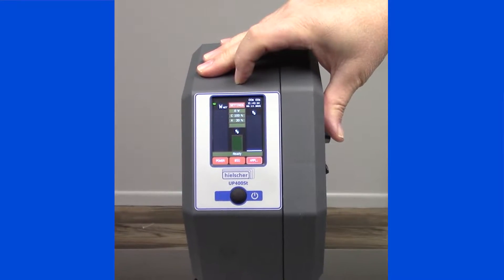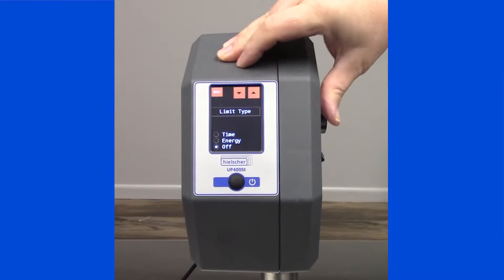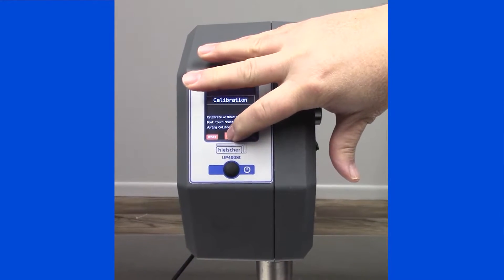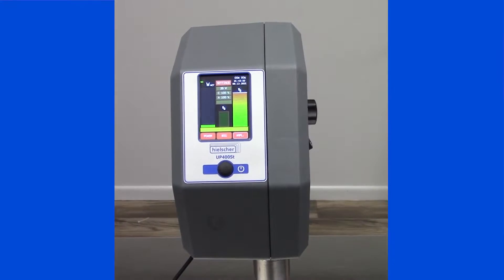The first thing we'll do is we're going to calibrate the unit. After the sonotrode is installed, I'm going to set settings, hit the down arrow, and this calibration, I hit start. The unit will self-calibrate.